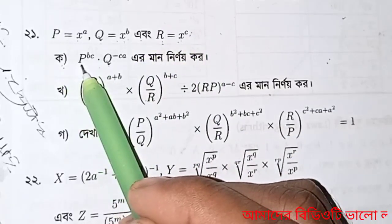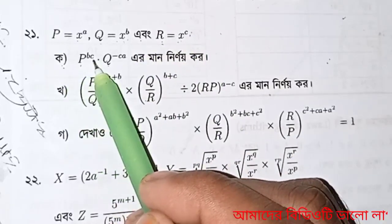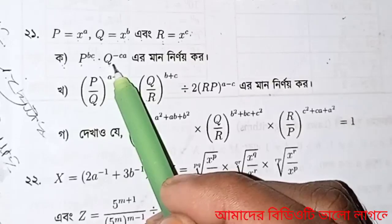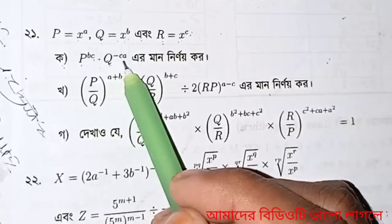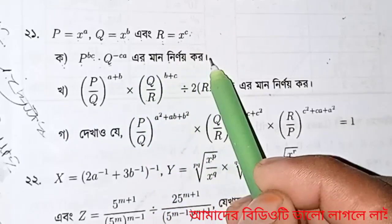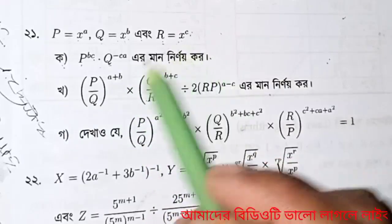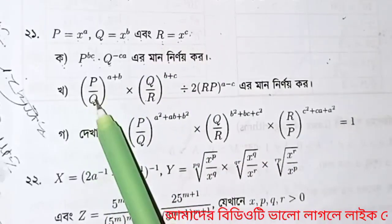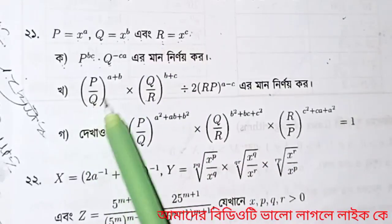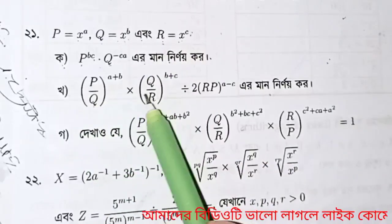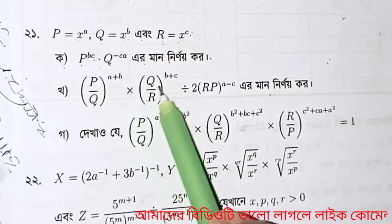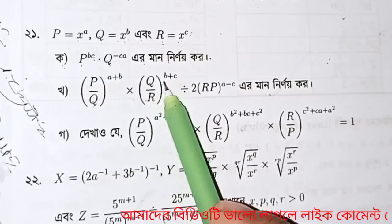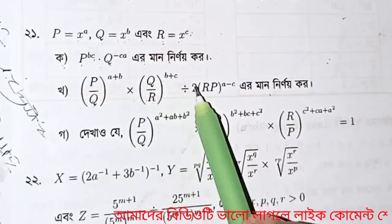Question number: P to the power B into Q inverse C. Evaluate P by Q to the power A plus B, C, into Q by R to the power B plus C.